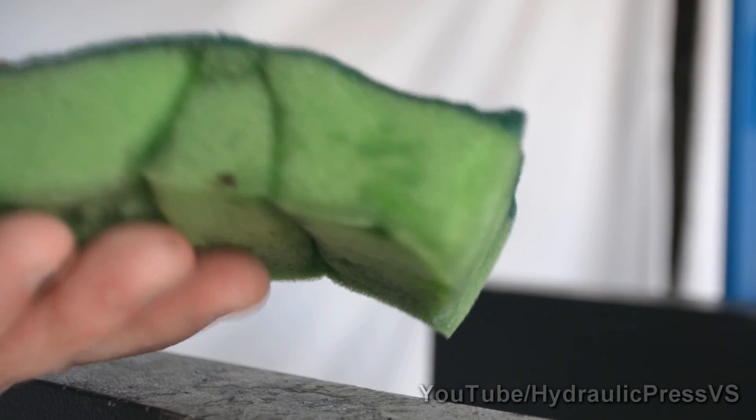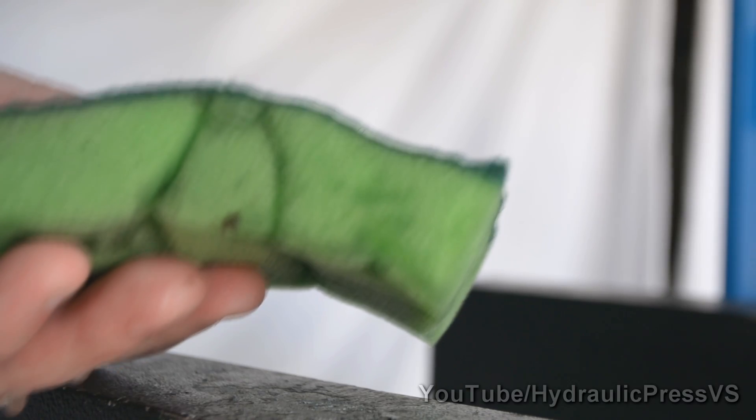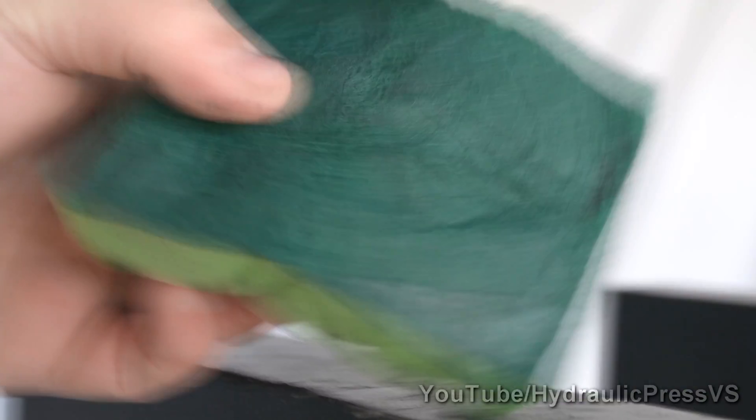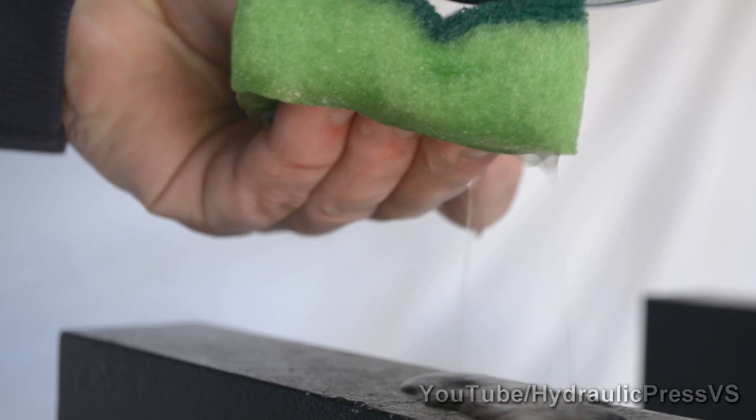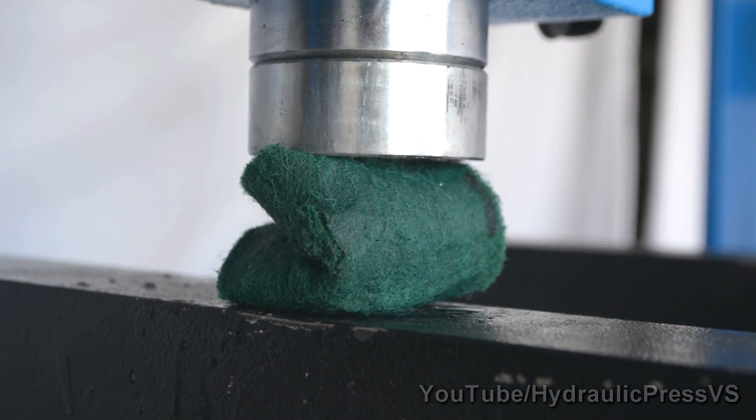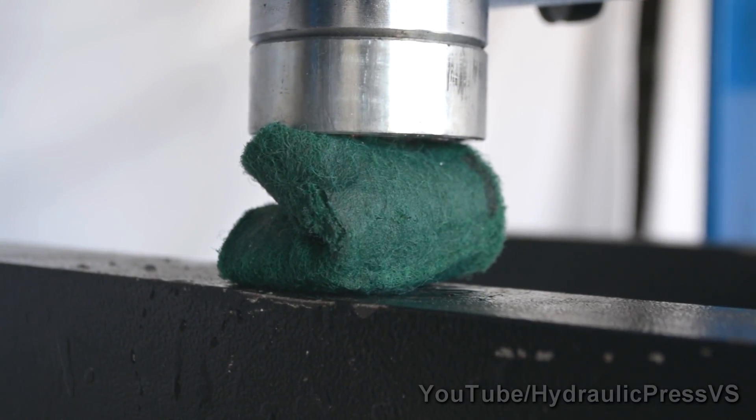Okay, now for the second challenge. We try to make this sponge really dry. You see that it's blue. By pressing. You see here? There's a lot of water on it. Okay, let's see if we can make it really dry by pressing it.